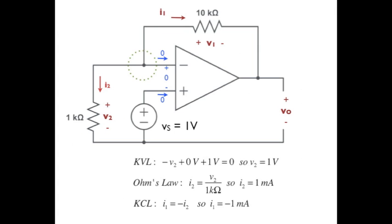So as the next step, consider that node shown with a circle-dotted line around it. Let's write KCL at that node. Since we're neglecting the input current to the op-amp, it's simply I1 plus I2 is equal to 0, or I1 is equal to minus I2, or I1 is equal to minus 1 milliamp.